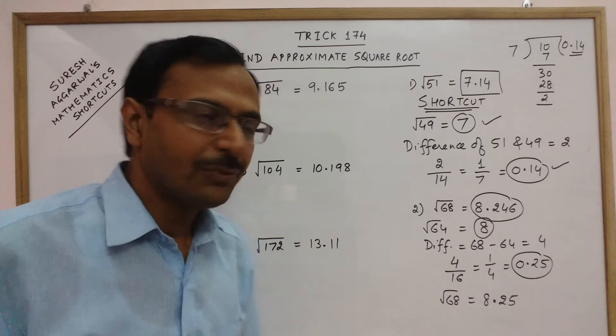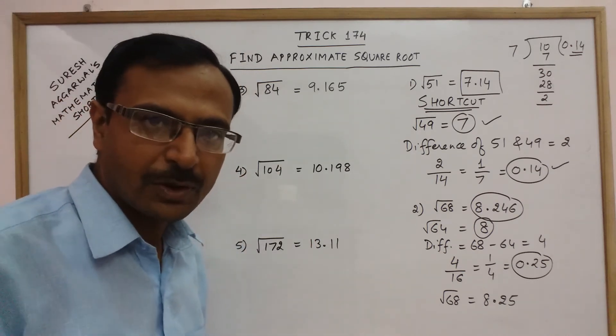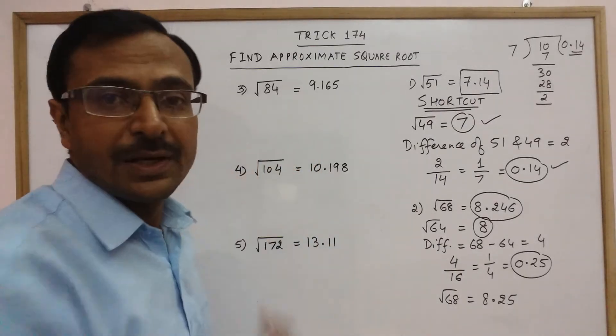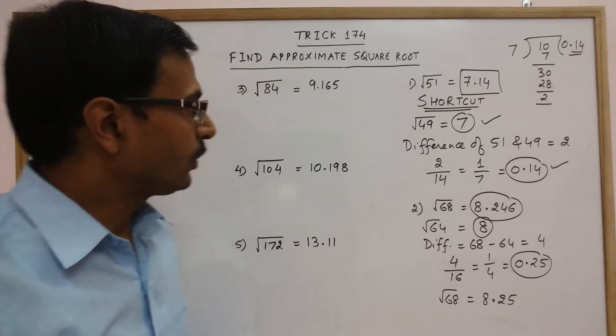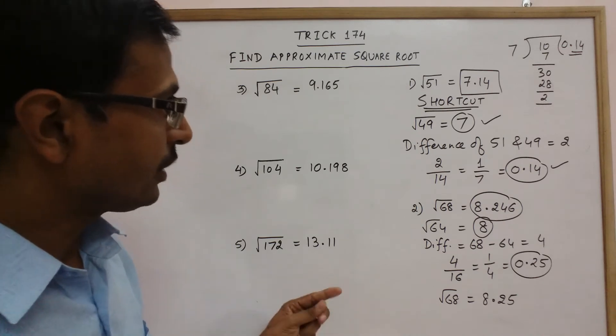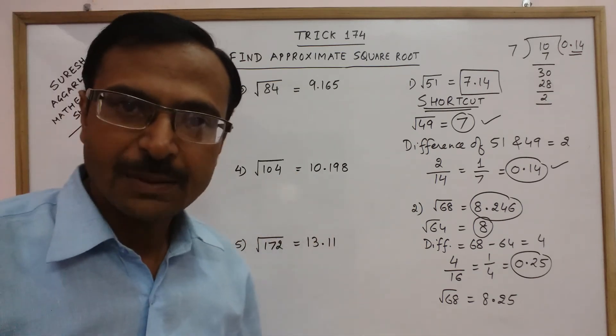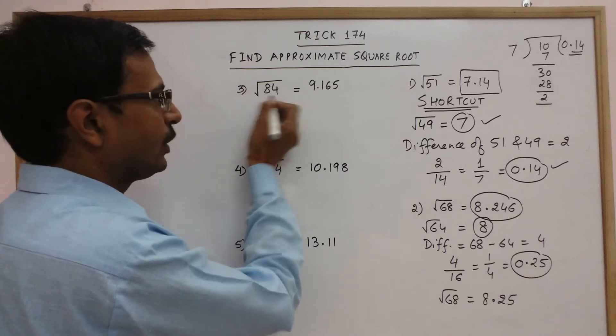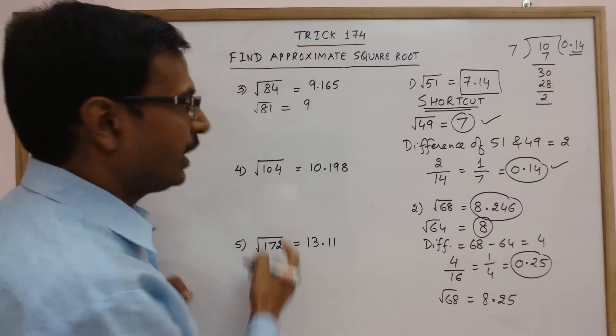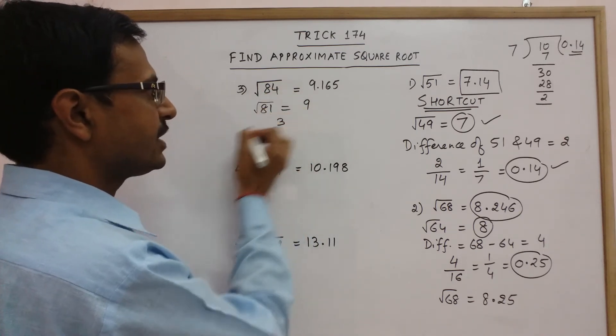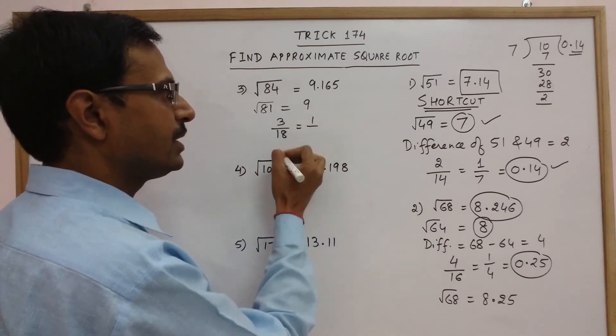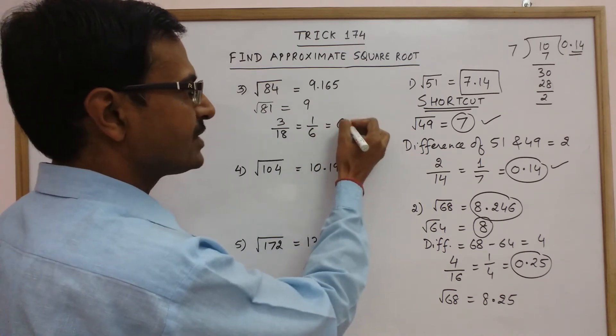Let us practice this method now for 2-3 more numbers. Now we will reduce the number of steps and try to practice this in lesser number of steps. See here we have root 84. Now the square root of 84 is 9.165 and now we will do it through the shortcut. See what is the number below 84 which is a perfect square root 81 that is 9. So this is the first part. And difference is 3, 84 minus 81. And double of 9 is 18. So this gives you 1 by 6.